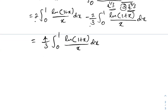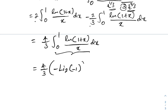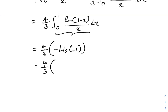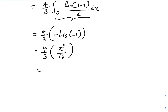Now this is a well-known integral. We know the integral from 0 to 1 of natural log of 1 plus x over x dx equals the Dirichlet eta function value, which gives eta(2), and eta(2) equals pi squared over 12. So here we have 4 over 3 times pi squared over 12, which simplifies to pi squared over 9. That is the answer.